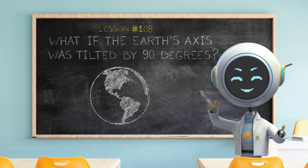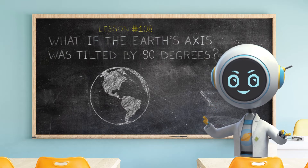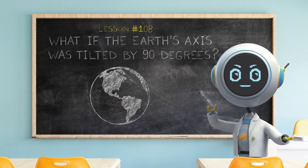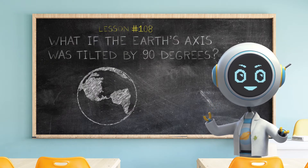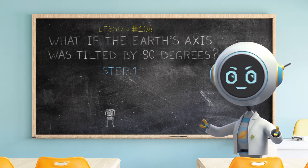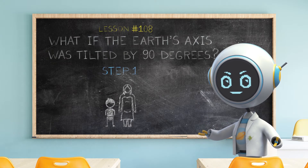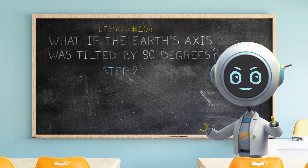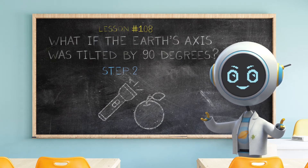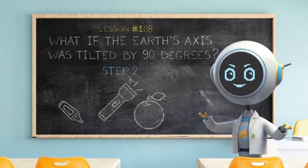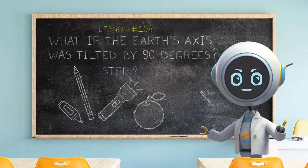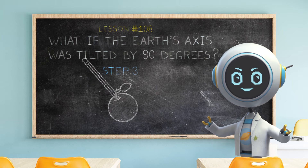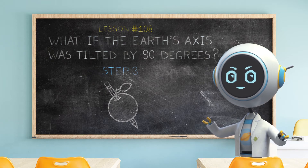Hey everyone, Cosmo here. Earth's tilt is what gives Canada its four seasons. What if you could simulate how this happens? Step one: find an adult. Step two: gather your supplies — you'll need a flashlight, a round fruit, a marker, and a sharp pencil. Step three: push the pencil through the center of the fruit. This will be the Earth's axis.